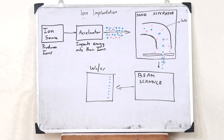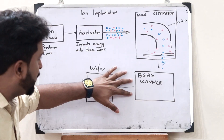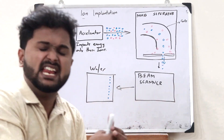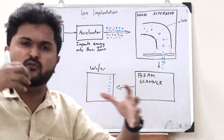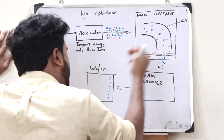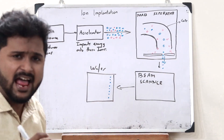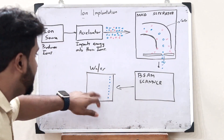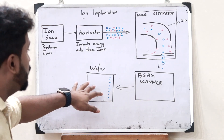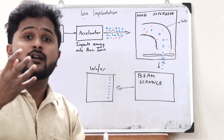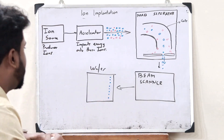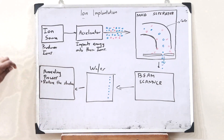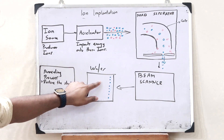After these particular ions are imparted or bombarded on top of this particular wafer, this happens at very high energy. These ions are bombarded with very high energy on top of this particular wafer. Once that happens, what we observe is that this wafer gets damaged because something with very high energy is striking it. Therefore, it loses its crystalline structure, and we have to restore this particular wafer. For that, we now do an annealing process. By the help of the annealing process, we can restore the structure of this particular wafer.